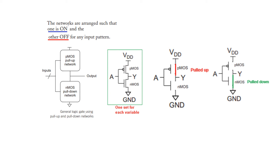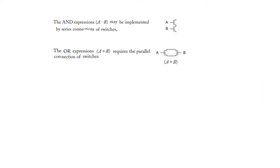Two very important points: when we have an AND expression with variables A and B, it is implemented by a series connection of switches. For an OR gate, the two switches are connected in parallel. Keep this point in mind.